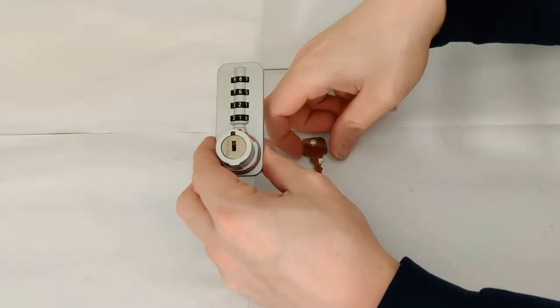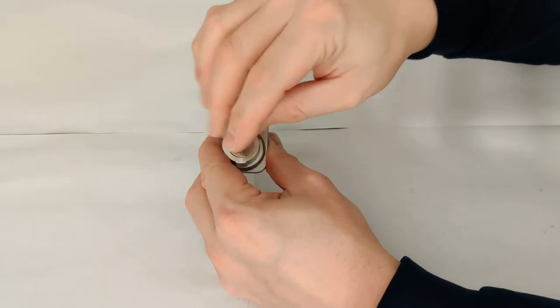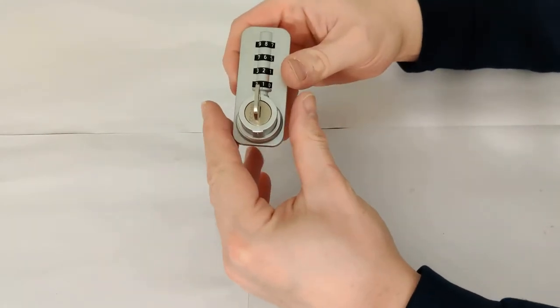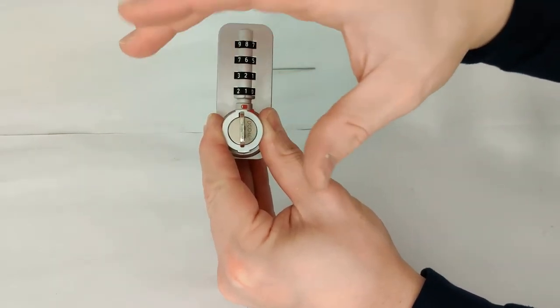So the first thing to do is we take our master key, put it into the lock, and we need to hold this knob in place and then we can turn the key 180 degrees like so.